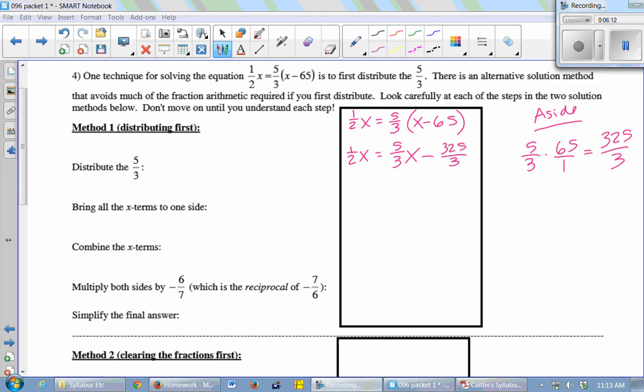Now I want to bring all the x terms to one side. So I want to move this (5/3)x to the left. So I'm going to have (1/2)x minus (5/3)x equals negative 325 thirds. So I have to be able to do that subtraction. I have to do 1 half minus 5 thirds. I need a common denominator, which would be what? 6. So this fraction I'd multiply by 3 over 3. This one I'd multiply by 2 over 2. And so I'm going to be doing 3 over 6 minus 10 over 6, which is negative 7 over 6. So I have negative (7/6)x equals negative 325 thirds. So that was combining the x terms.